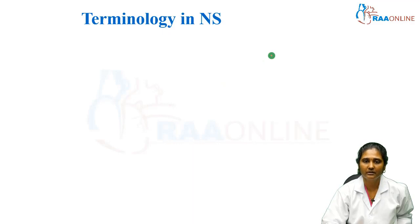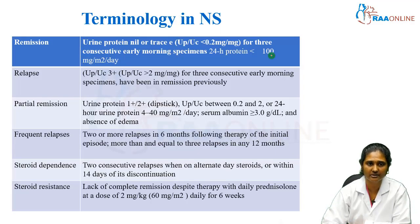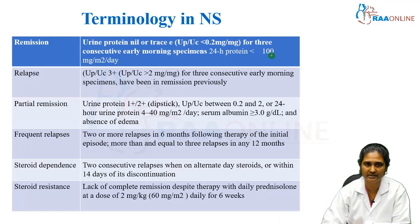Before going into detail about nephrotic syndrome, you should know the terminologies or the definitions which we are using in the context of nephrotic syndrome. The first and foremost is remission. You know the definition of nephrotic syndrome — edema, proteinuria, and hypoalbuminemia. Once you started treatment, when the child started showing signs of improvement or when the child stopped the disease progress, that is called remission.